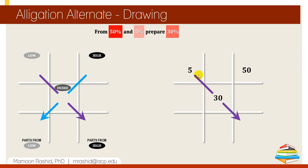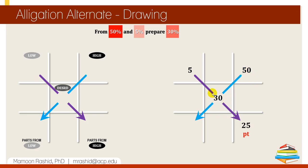Draw a line that tells us the difference between these two values: 30 minus 5 is 25. Always write 'PT' (which represents parts) with this number to avoid confusion. This tells you to take 25 parts from the high concentration of 50. Similarly, draw another line and put the difference between 50 and 30 in the small box, which tells you to take 20 parts from the low concentration.